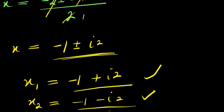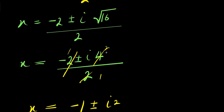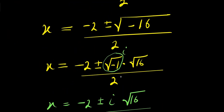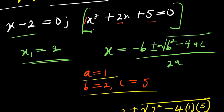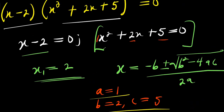So these are the two complex values for x, and we have one real value for x which is x equals 2.